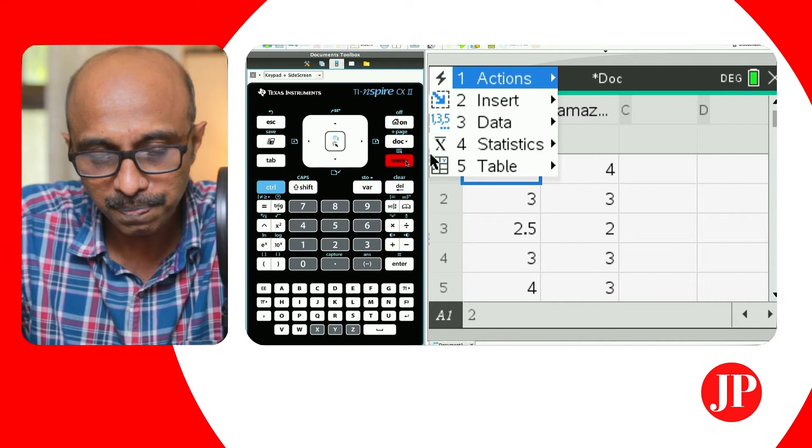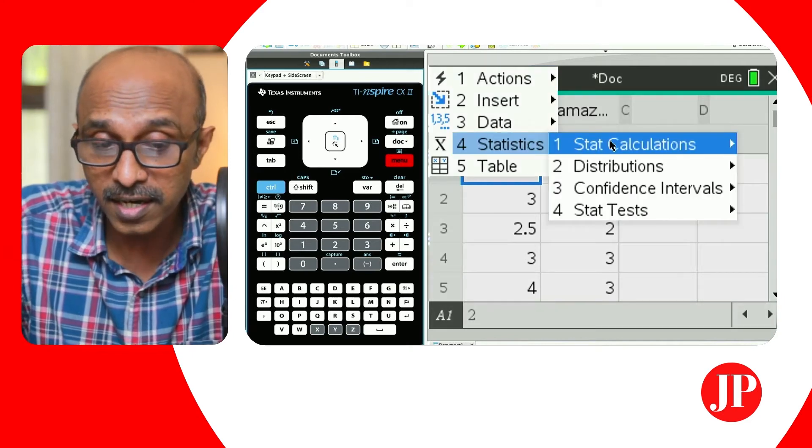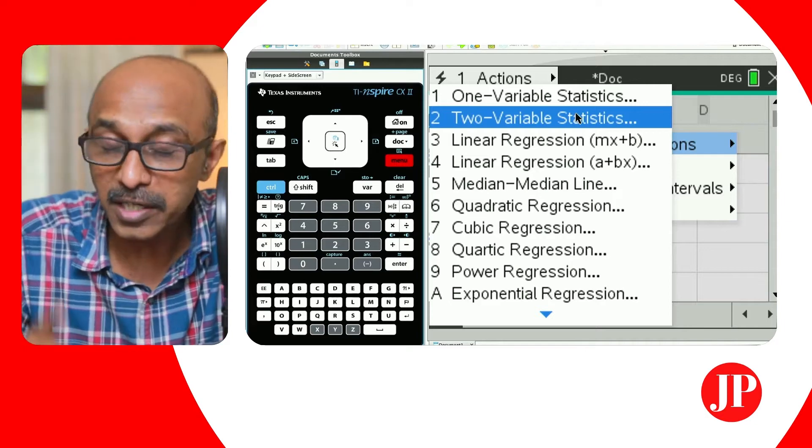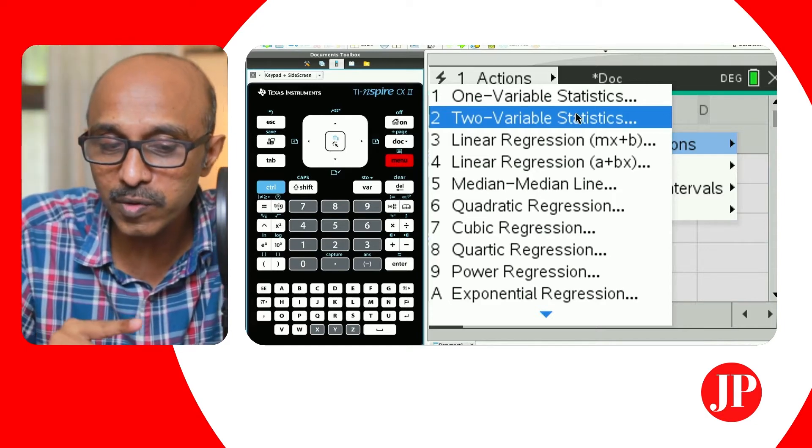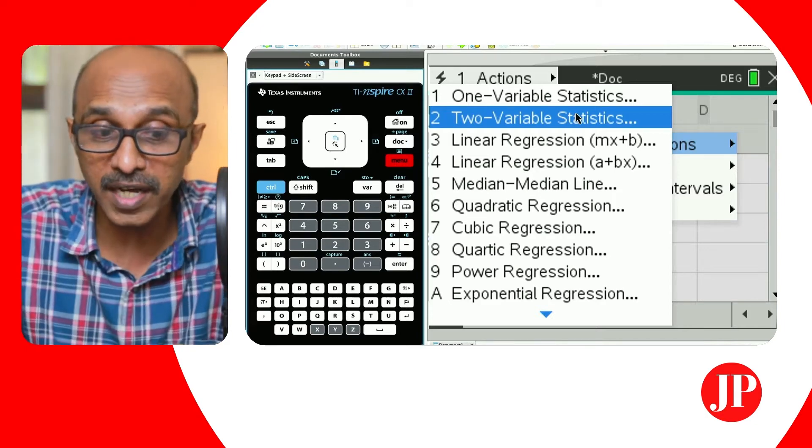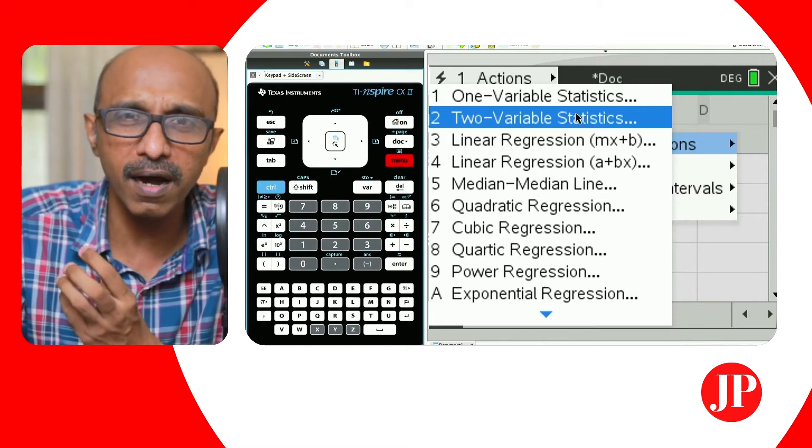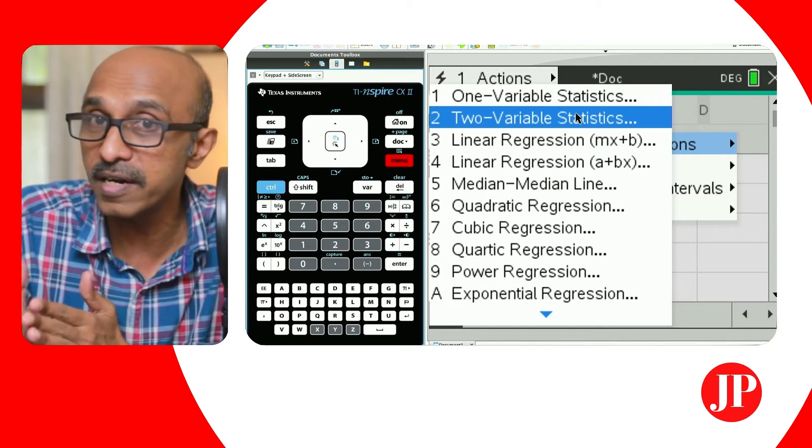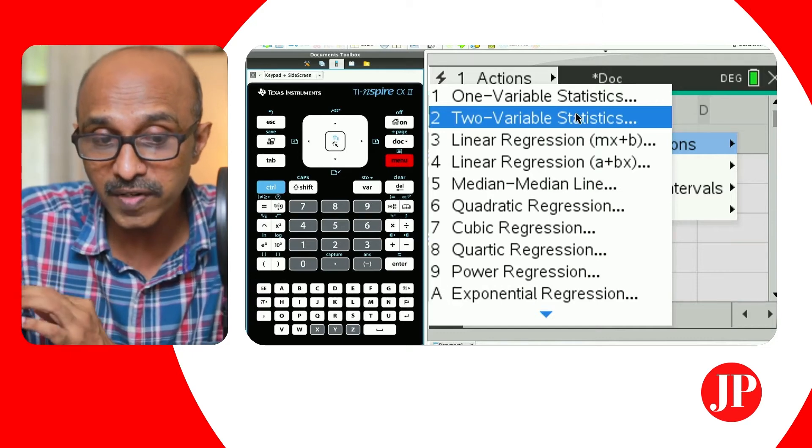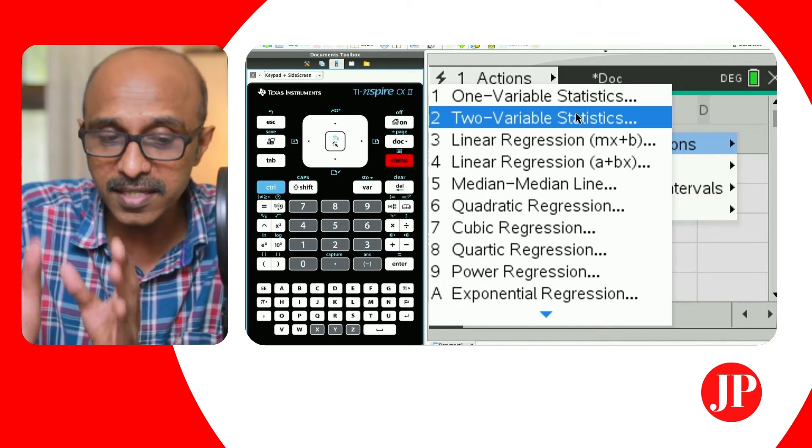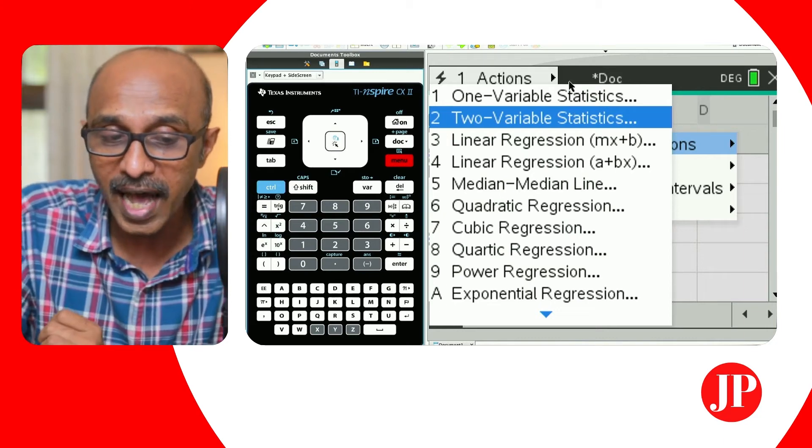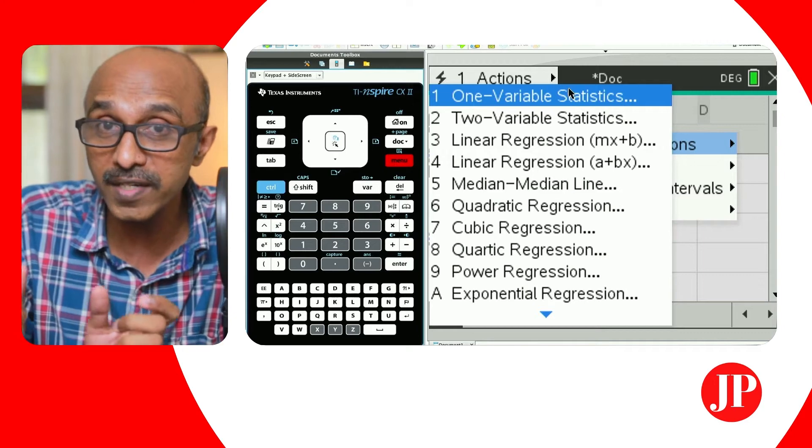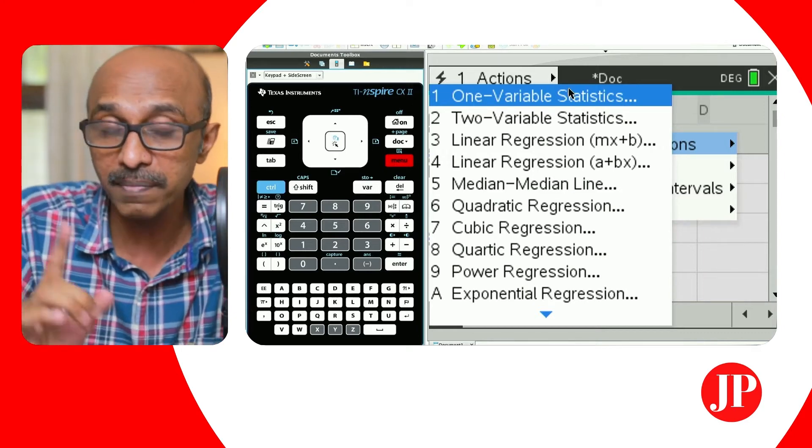Because when you go to menu and you go under statistics and stat calculations, there's something called two variable statistics. Okay. And two variable statistics is to be used when you've got two such lists of data, but you're trying to figure out whether those sets of data are related. You're studying correlation. You're trying to find regression, you know, the line of best fit between those two sets of data. But this is not that case.